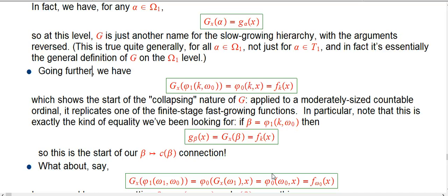So what about a little further? Suppose we had phi 1 of k omega 0 for some finite k.